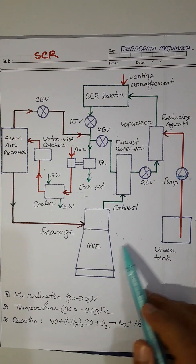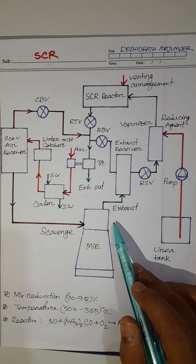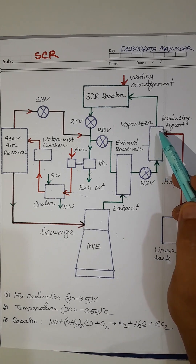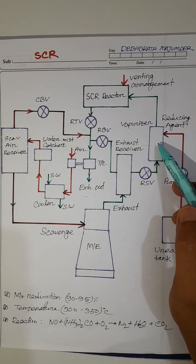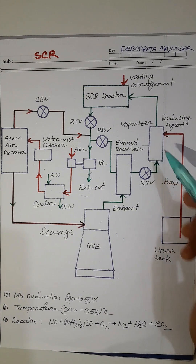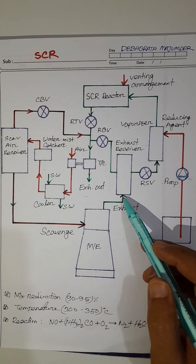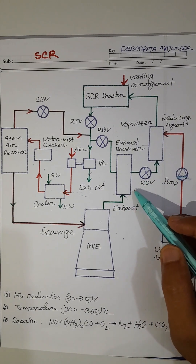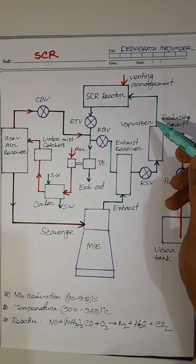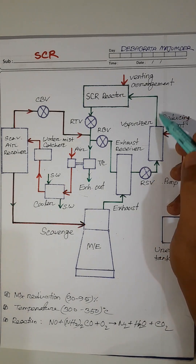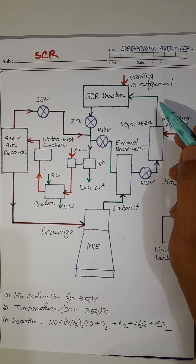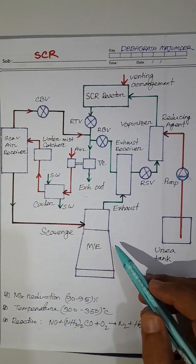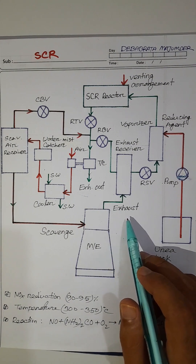Whenever the exhaust gas temperature is above 500 degrees centigrade, the urea is burned and unable to absorb NOx — high temperature is undesirable. Also, at low exhaust gas temperature, urea cannot decompose into ammonia and is unable to absorb NOx, and the urea will deposit and block the exhaust gas piping. So both low temperature and high temperature are undesirable.